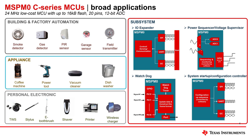For example, these devices can be used in smoke detectors, coffee machines, shavers, and more. These devices can also replace various analog functions in your system, including IO expanders, power sequencers, watchdog timers, and system configuration controllers, effectively reducing your BOM cost and board space.